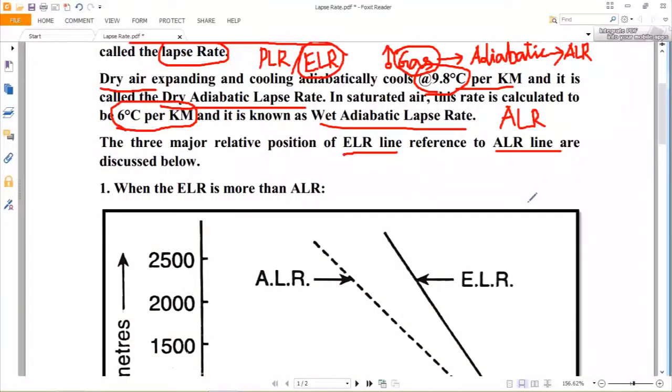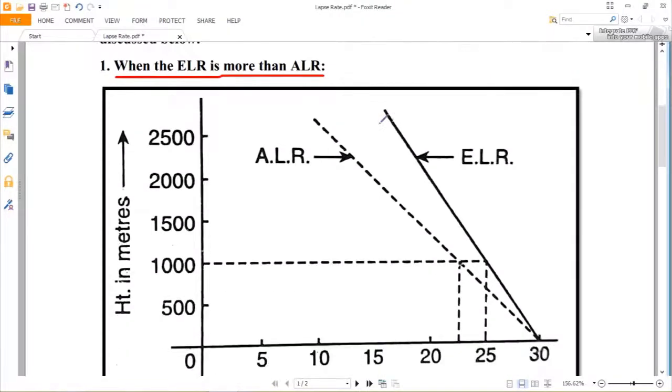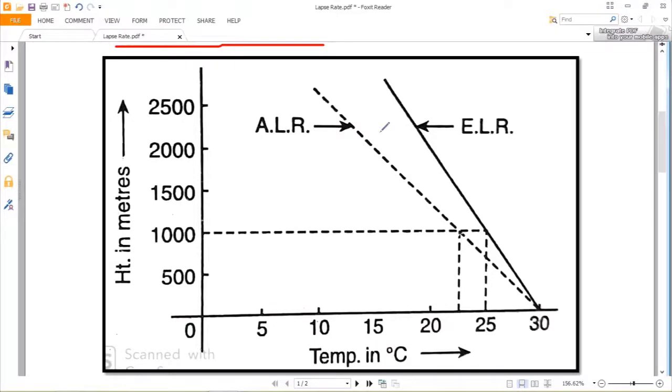The first case is when the ELR is more than the ALR. The environment is said to be unstable. In such a case, the rising parcel of air will always remain warmer than the surrounding environment. This is because as we go up, the environment is getting cooler more quickly than the rising parcel of lighter air, and hence the rising parcel of air will always remain warmer than the environment.